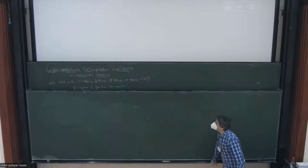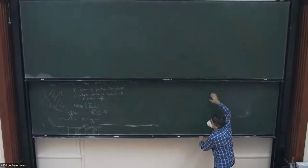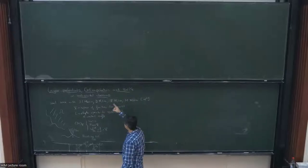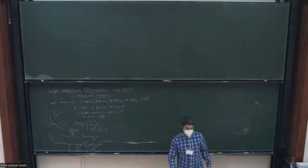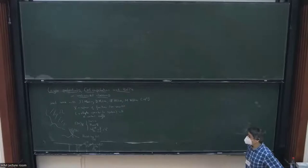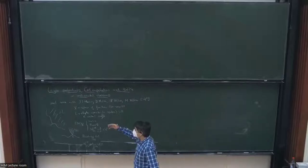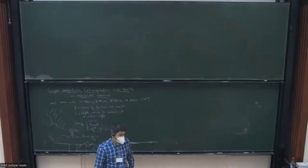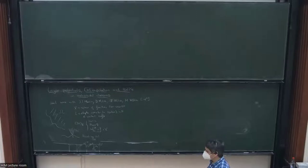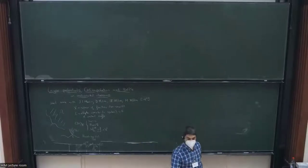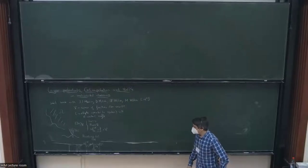Since I'm using the blackboard, I've written some of the stuff so that it's ready for you. I'm going to discuss today some joint work with Jose Marin, Dorina, Irina, and Mario Mitrea, and of course myself — which is the fifth in this power. This is a joint project that became a book that is about to be finished. What we're doing in this book is to consider the theory of layer potentials on unbounded domains.